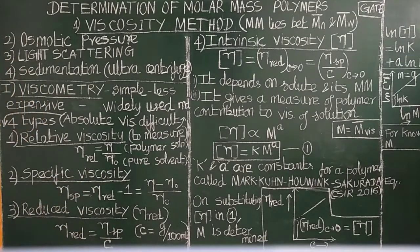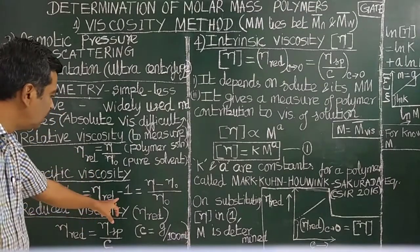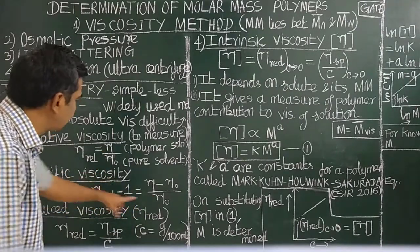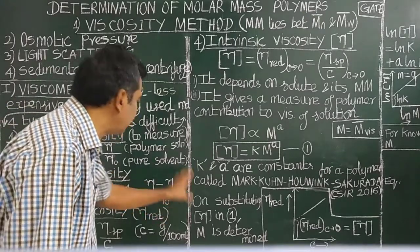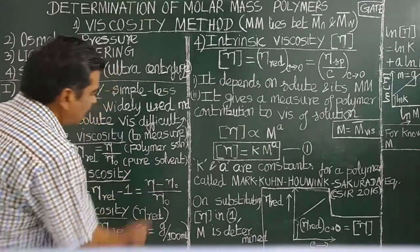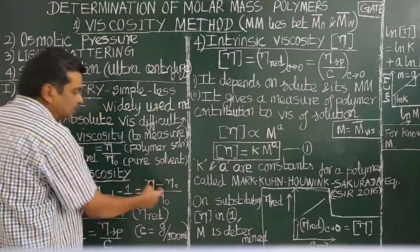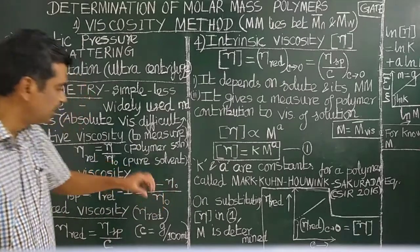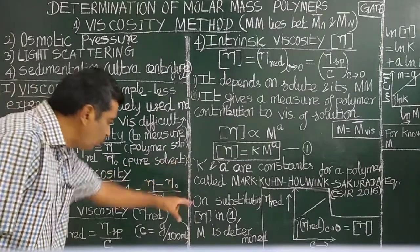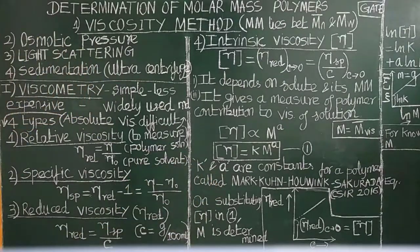The specific viscosity is equal to relative viscosity minus 1. It is defined as the ratio of absolute viscosity of the polymer solution to the viscosity of the pure solvent.